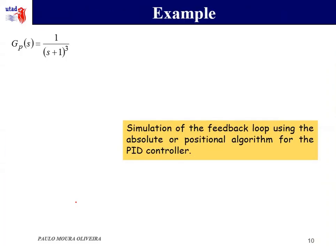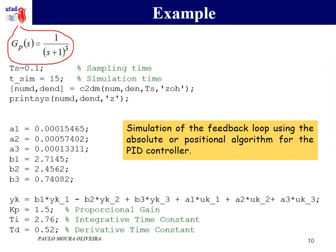As an example, we are going to simulate a digital simulation for this model with the three poles, using the absolute form of a PID controller. The first thing that you have to do is to convert this to the digital domain. We can do this using the Z transform.